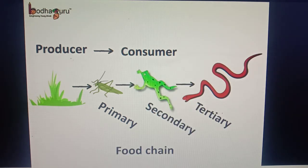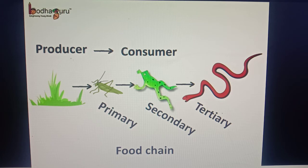Then the carnivores eat the primary consumer. They consume nutrients and food from the plants indirectly, so they are the secondary consumers. For example, a frog eats the grasshopper, so the frog is the secondary consumer.